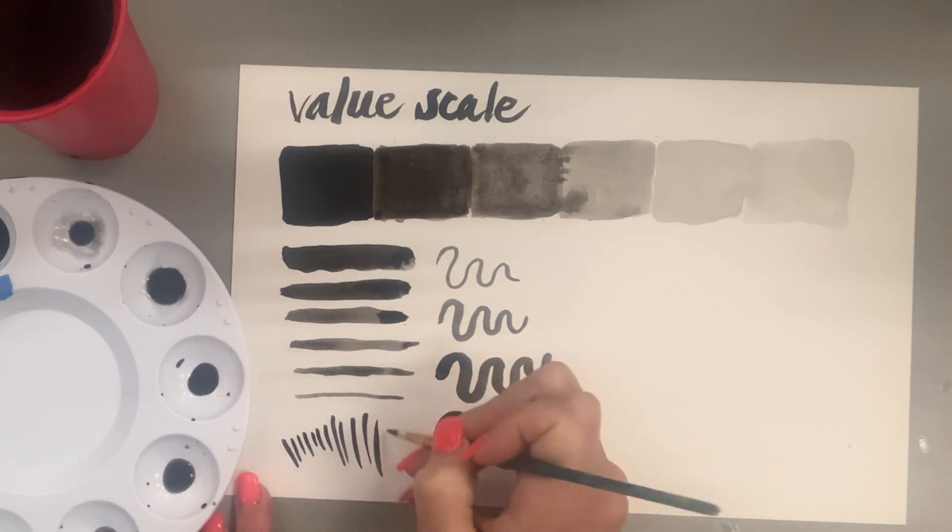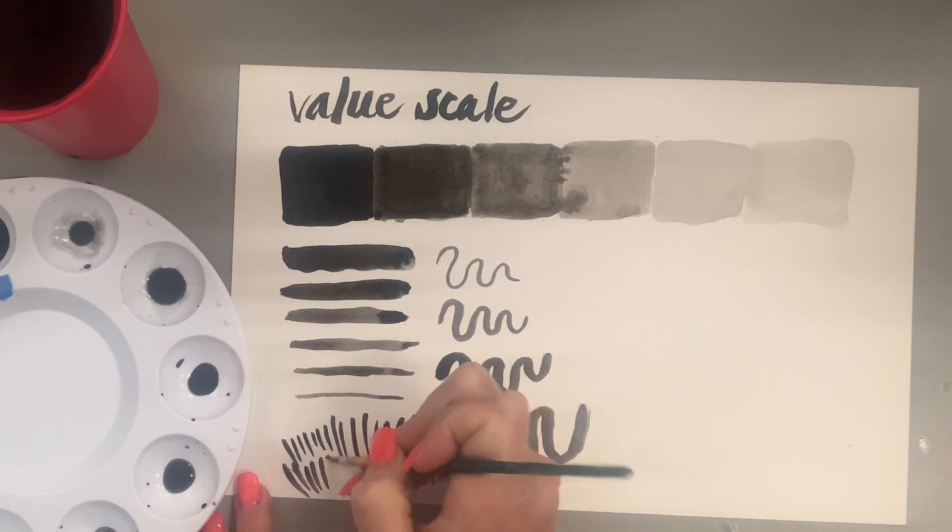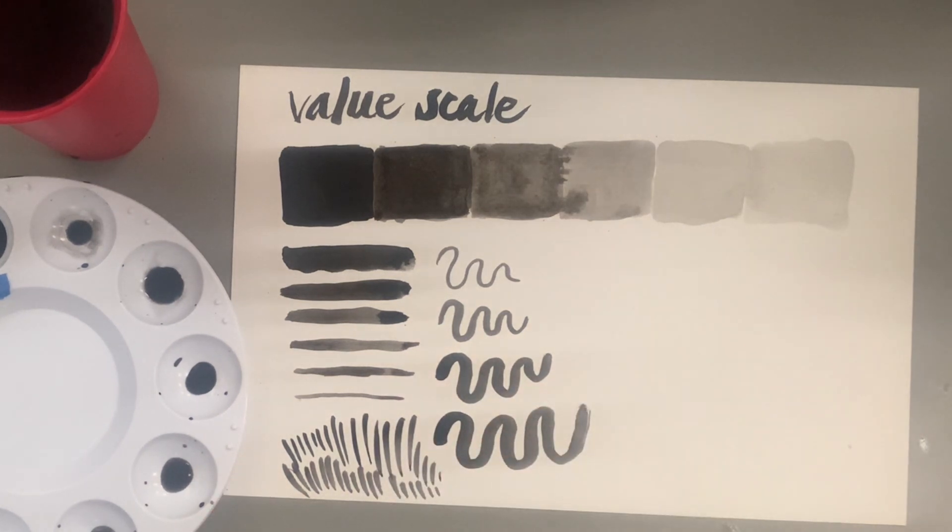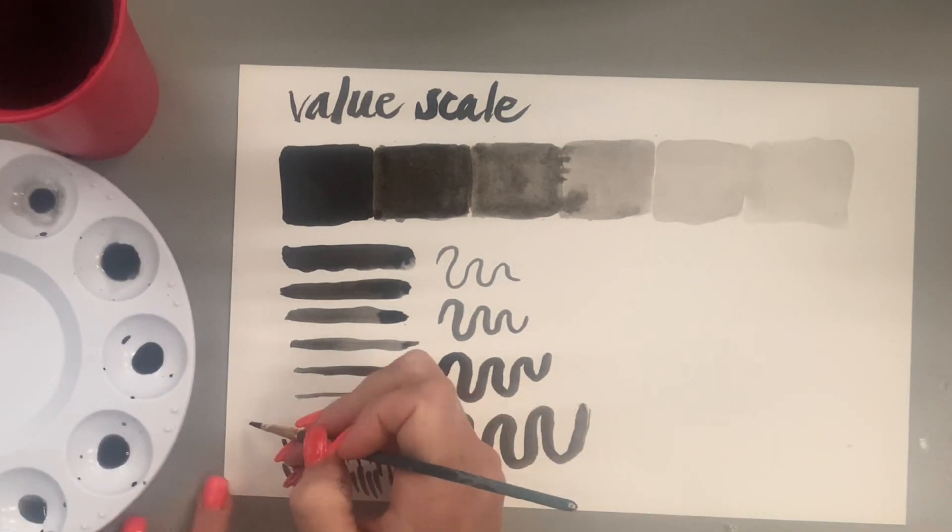For this one I'm using straight up black and I'm practicing some hatch marks here, so just small lines that repeat next to each other. This is really nice, it's fun, and I know I can create a finer line when I get out my nib, my calligraphy pen, which we'll do at the end of the video.